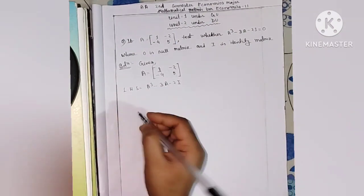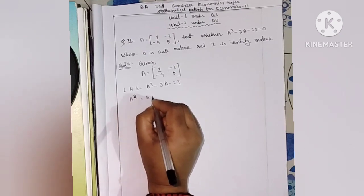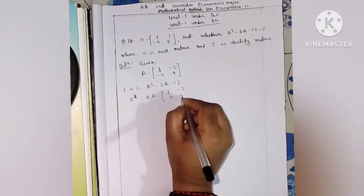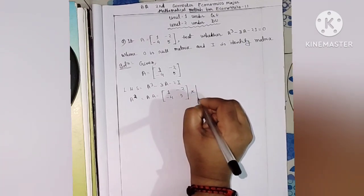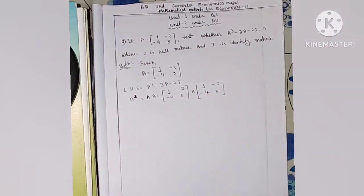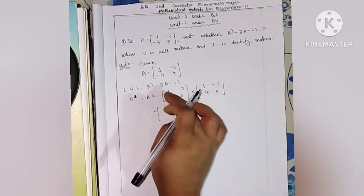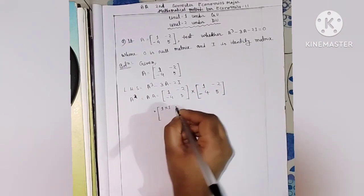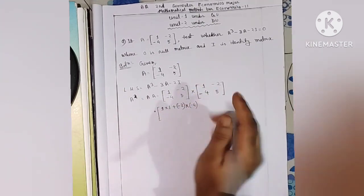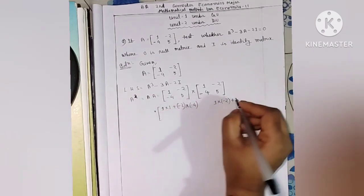To find A cubed, we first compute A squared, which is A into A. So we multiply matrix A — entries 1, minus 2, minus 4, 5 — by itself. We compute first row first column, first row second column, second row first column, second row second column.